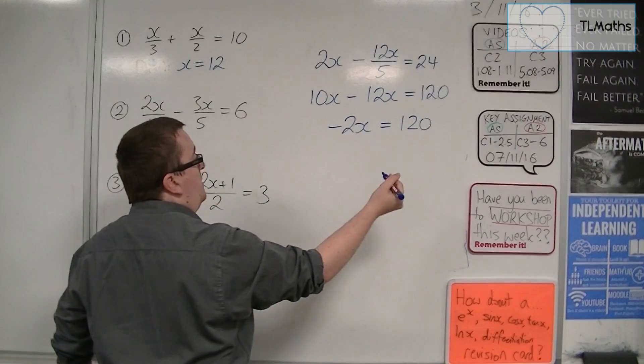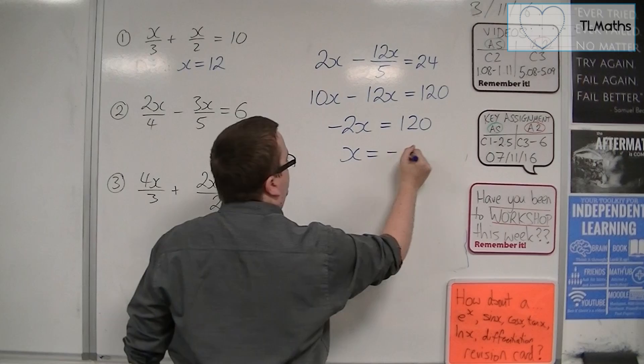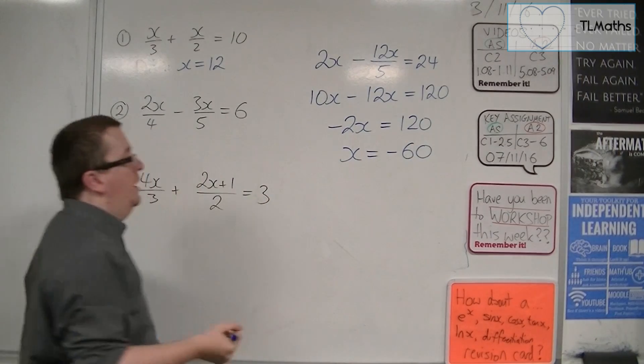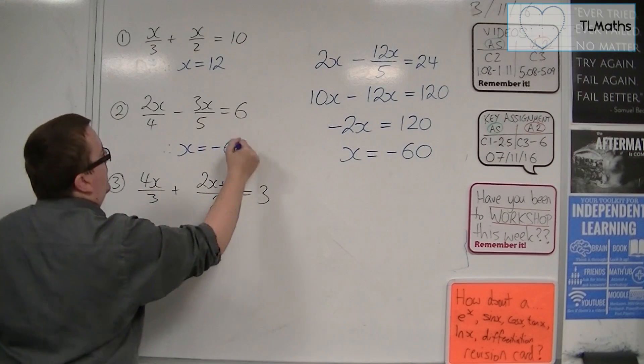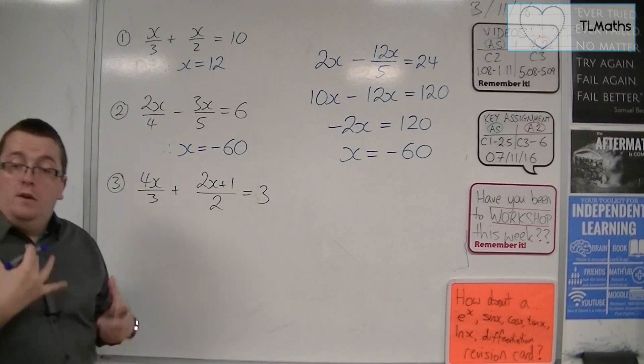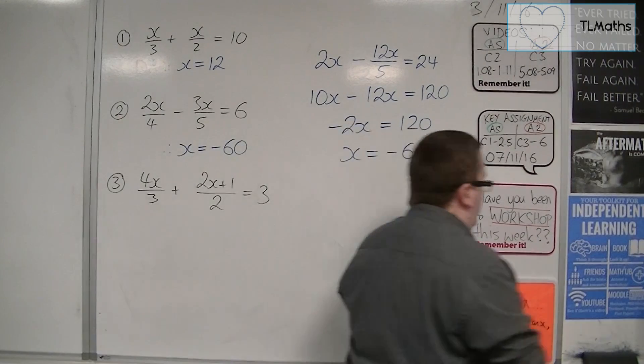So 10x take away 12x is minus 2x. And then divide both sides by the minus 2. So this answer is x is minus 60. Exactly the same method both times.